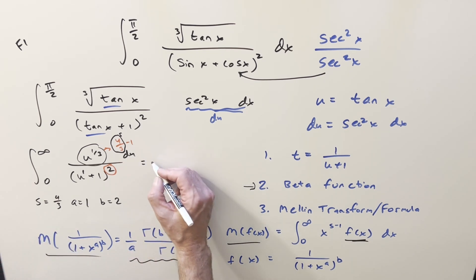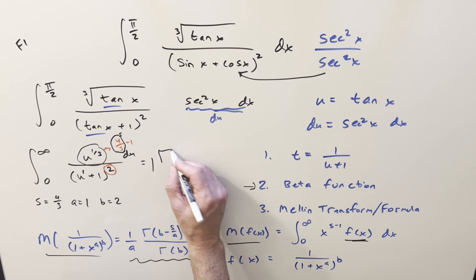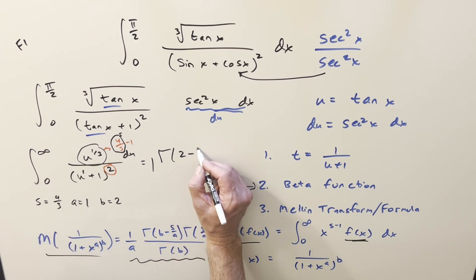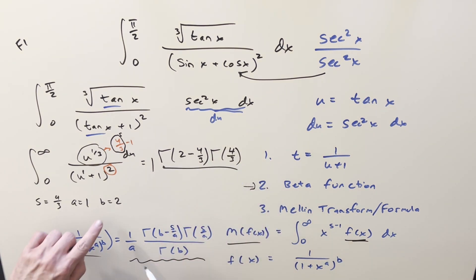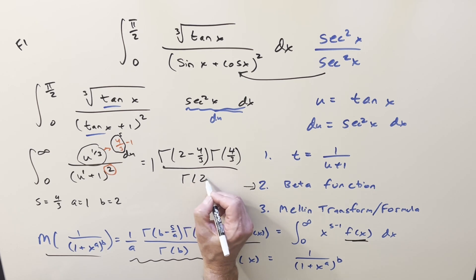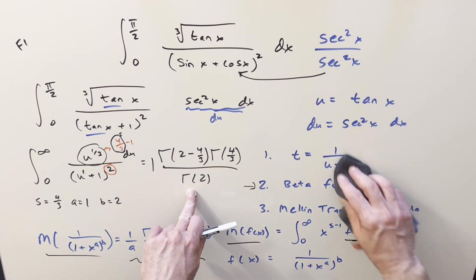So from here, we'll just go ahead and use this formula. Our a value, one over one, so that's just going to be a one in front, we don't have to worry about that. Gamma b minus s over a, so that's going to be two minus, again, a is just one, so it's going to be two minus four thirds, times gamma of s over a, just gamma of four thirds. And then the denominator, we're going to have just gamma of b, so that's just going to be gamma of two.